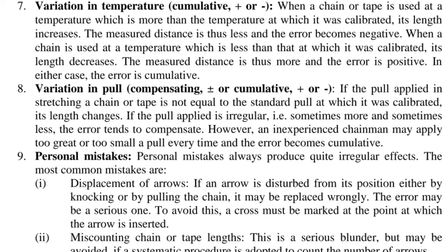8. Variation in pull — compensating or cumulative, positive or negative. If the pull applied in stretching a chain or tape is not equal to the standard pull at which it was calibrated, its length changes. If the pull applied is irregular — sometimes more and sometimes less — the error tends to compensate. However, an inexperienced chainman may apply too great or too small a pull every time, making the error cumulative.